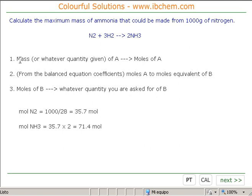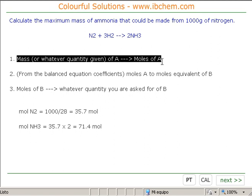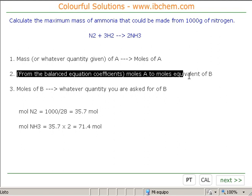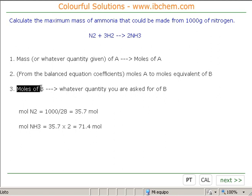71.4 moles. So, we've fulfilled stage 1. We've turned the first component into moles. We've fulfilled stage 2. We've looked at the moles equivalent of what we want to find. Now, we've got to go to stage 3. We've got to turn our moles of ammonia back into the quantity we were asked for. We were asked for the mass of ammonia.